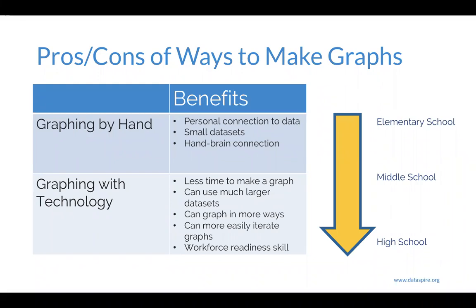Rather than thinking of this as an either/or, we can think of it as a progression. In elementary school, the vast majority of graphs students make should be by hand, when that physical hand-coordination is so key for development. In middle school we can start the transition where students are both graphing by hand and with technology. And as students move into high school, they're doing more and more graphing with technology. This progression also overlays nicely with the complexity and size of data sets and the complexity of questions students are asking. By the time they graduate they're ready — they have the grounding in graphing by hand and the benefits of both approaches.